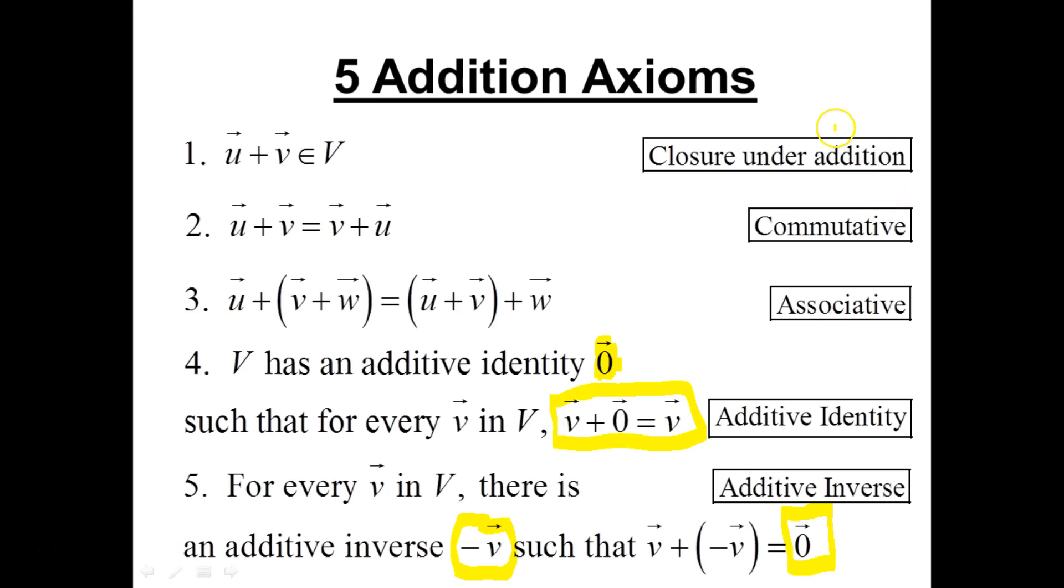So there's five addition axioms that must hold. Closure under addition, commutative, associative, and then you need an additive identity and an additive inverse to get you back to that identity. And that's half the story for vector space.